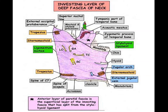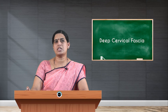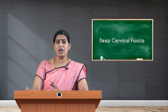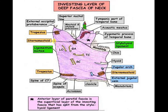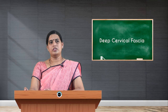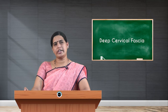Posteriorly, the investing layer is supported by the ligamentum nuchae — the ligament running from the external occipital protuberance along all the cervical spines to C7. Anteriorly, it meets the fellow of the opposite side at the midline, attaching along the chin, hyoid bone, and midline structures down to the jugular notch.